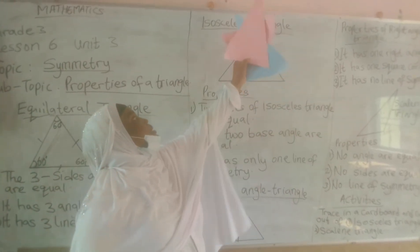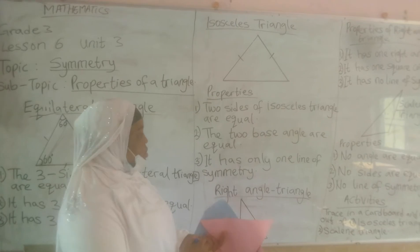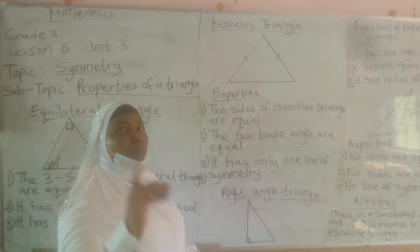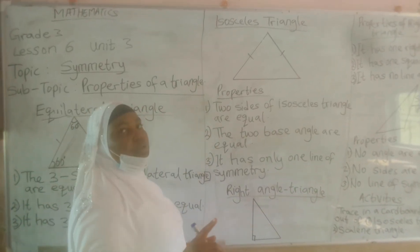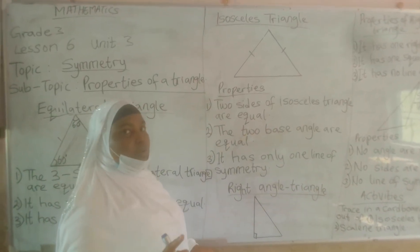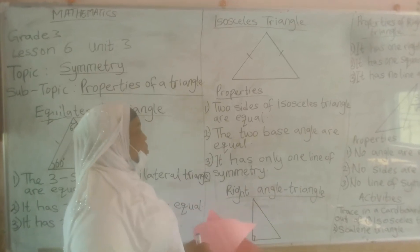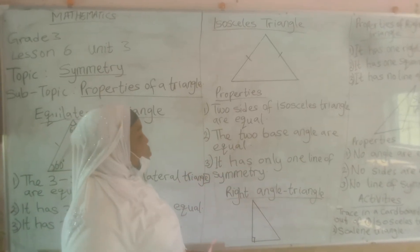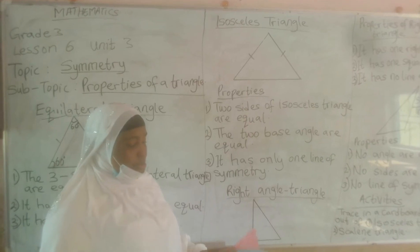This angle is either less than or more than 60 degrees. Then it has only one line of symmetry. Remember, we have done that before. It has only one line of symmetry.